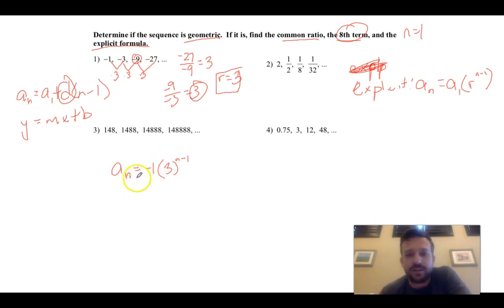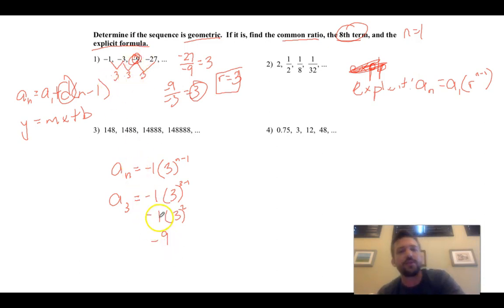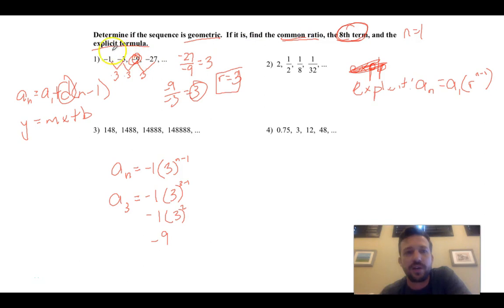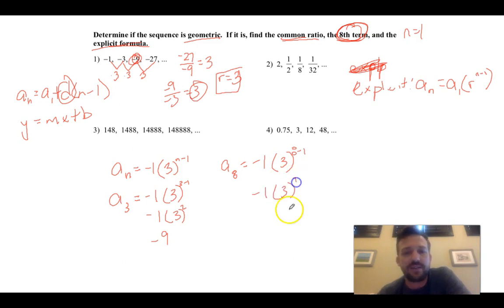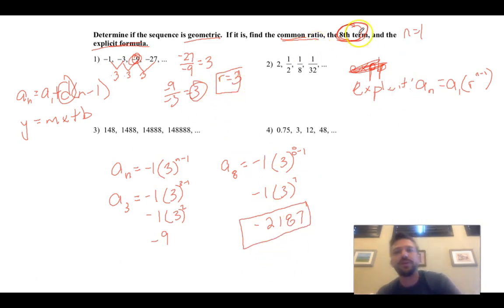Let's just prove that it works real quick. Let's say we want the third term — the third term is negative 9. So a sub 3 equals negative 1 times 3 raised to the (3 minus 1), which is 2. So we have negative 1 times 3 squared — that's 9 times negative 1, which gives you negative 9. And that gives you the third term. So if it wants the eighth term, a sub 8 equals negative 1 times 3 raised to the 7th. 3 to the 7th is 2,187, so this comes out to negative 2,187. That's the eighth term.